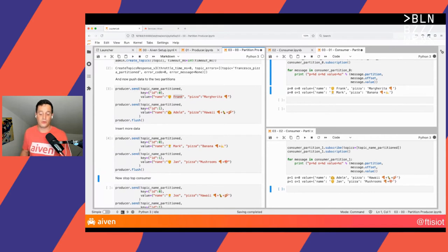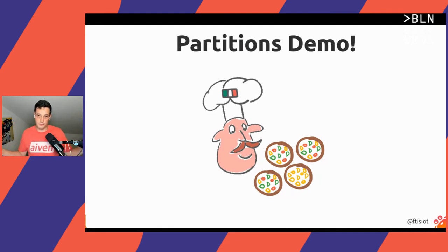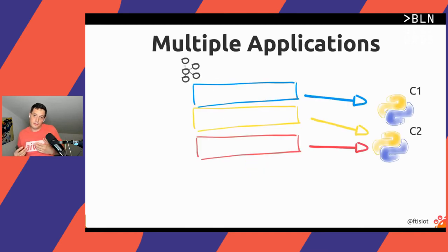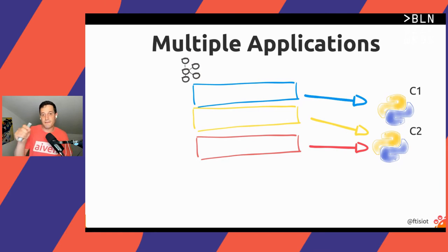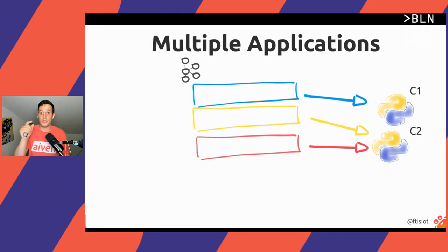Now let's go to a few more slides. So far, we saw something very simple: one or more threads of a producer, one or more threads of a consumer. However, when we read a message from Kafka, Kafka is not going to delete that message, making it available for other applications to read again. Going back to our pizza analogy, we could have a topic with two consumers who are our pizza makers — they want to consume all pizza orders but don't want to read the same order twice.